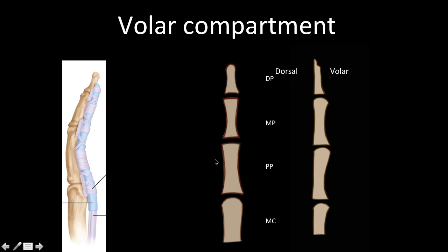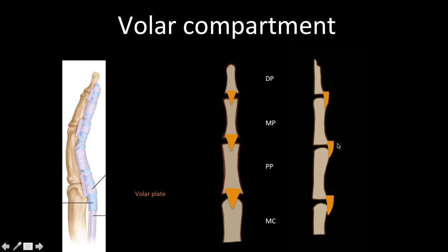Looking at the diagrammatic coronal and sagittal images of the finger — dorsal side above, volar side below — with labeling of metacarpal, proximal phalanx, middle phalanx, and distal phalanx. The first structure is the volar plate, the deepest structure on the volar aspect. It is an inverted triangular structure with a broad base attachment to the distal bone and a slender attachment to the proximal bone. Volar plates are present at all joint levels.